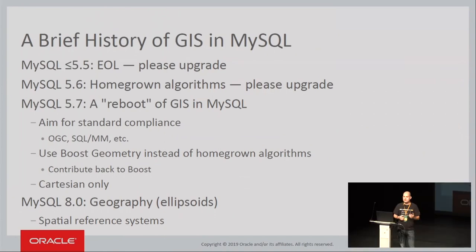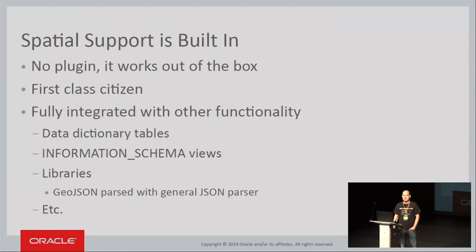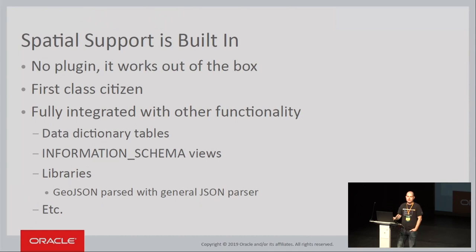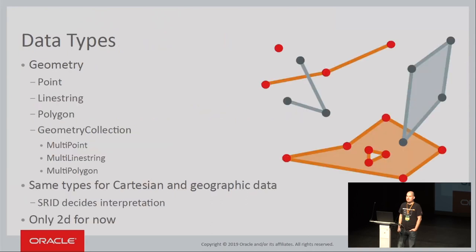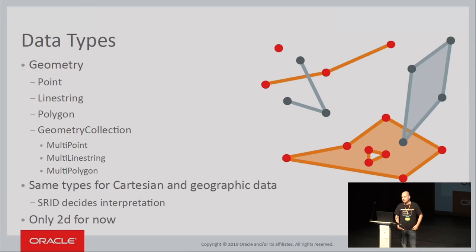Now we have a catalog of spatial reference systems, both Cartesian and geographic, and it's built in. The second thing I want you to remember from this talk is: if you have MySQL, you have spatial support. It's always there — you can't even compile it out. Points and line strings are basic data types in the same way that numbers and text strings are. It's fully integrated with the data dictionary and information schema views. There are no plugins, no extensions to install and configure.